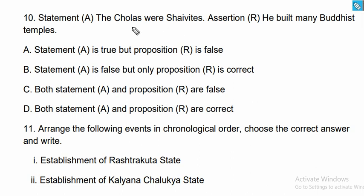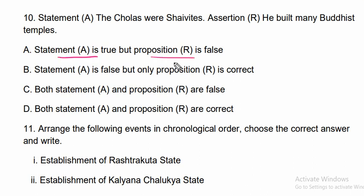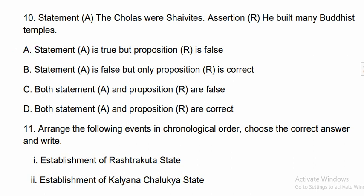Question ten: Statement A says the Cholas were Shaivites, and the assertion says they built many Buddhist temples. The correct option is A — statement A is true but the assertion R is false. They were Shaivites but did not build Buddhist temples.